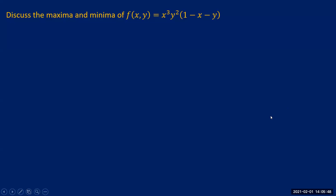Take this question. We are discussing maxima and minima of a function of two variables. When you are given a function of two variables, recall the procedure: we take the actual function as it is. The first step is to find stationary points, so we need to differentiate f with respect to x and then with respect to y.